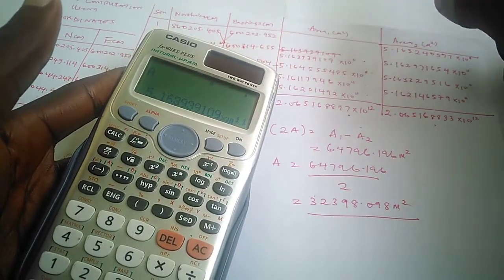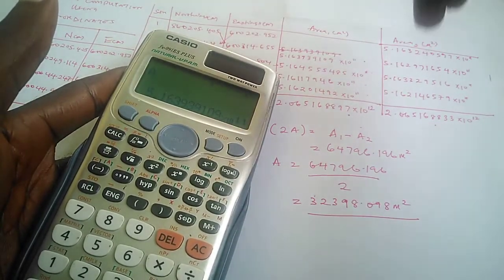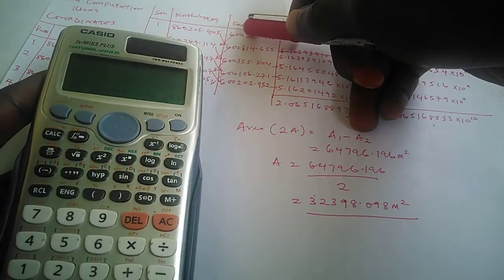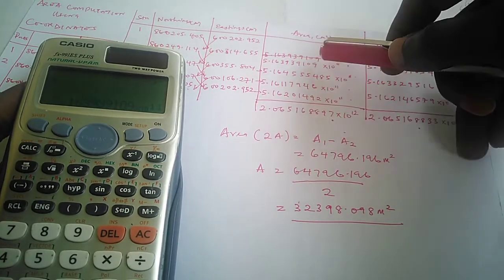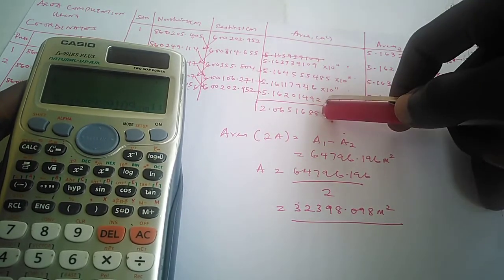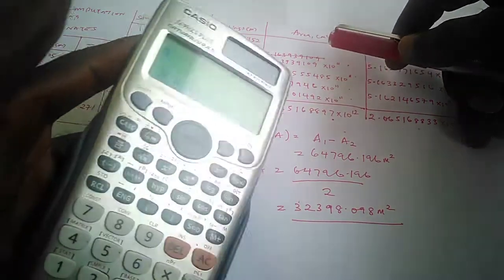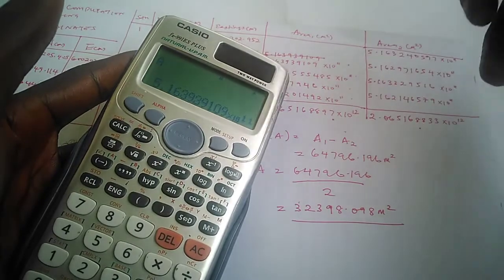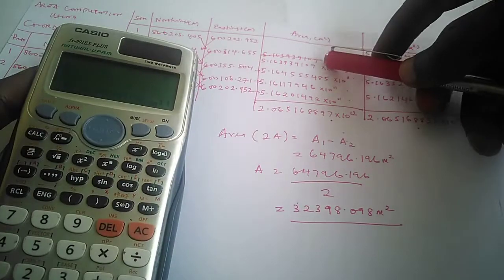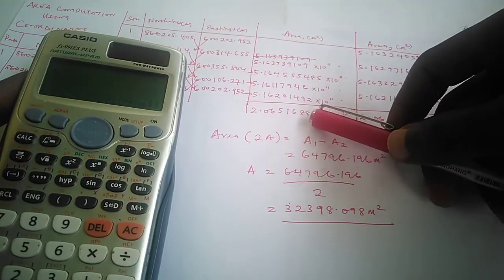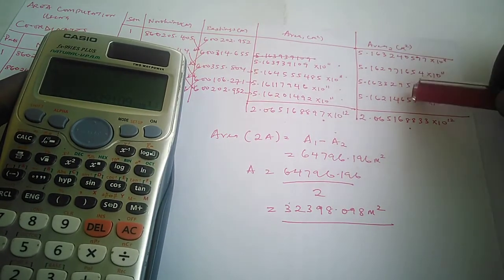The best thing you are going to do is make sure you store these values in your calculator. Press shift, then this RCL—the store will come out because store is actually a second function here. Then you choose any alphabet. Let's say we choose alphabet A, which means the product we got for this multiplication has been stored on alphabet A. By the time you add these things up, you get 2.065168897 times 10 to the power 12.